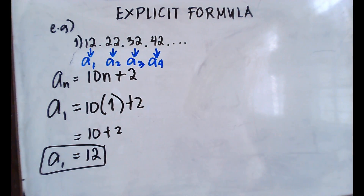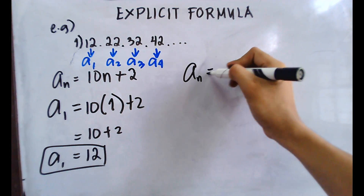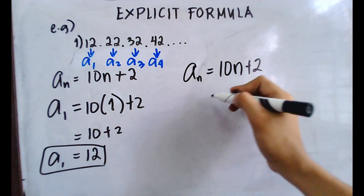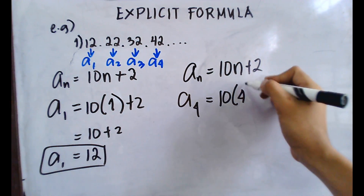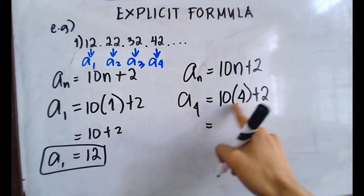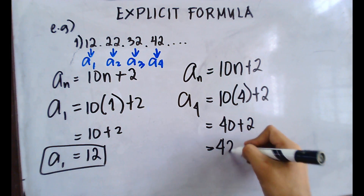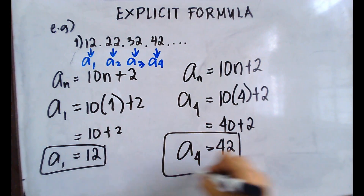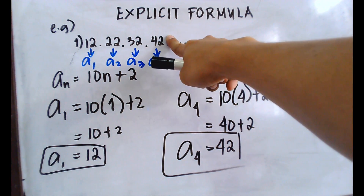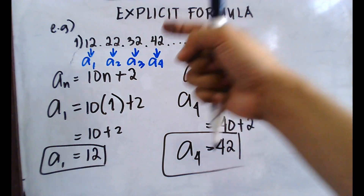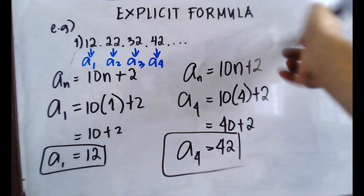Let's also check a sub 4 — is it really 42? Using the explicit formula: a sub 4 equals 10 times 4 plus 2, which is 40 plus 2, which equals 42. This confirms that a sub n equals 10n plus 2 is the correct explicit formula for this sequence. You can use it to find any term, such as the 50th term.